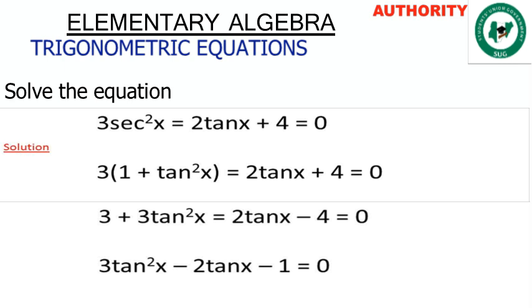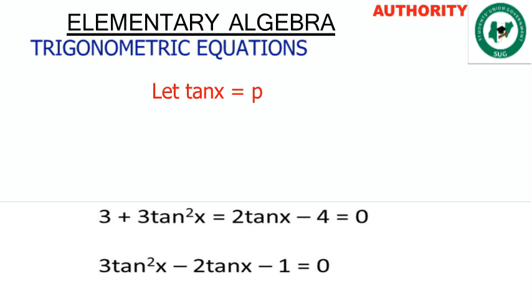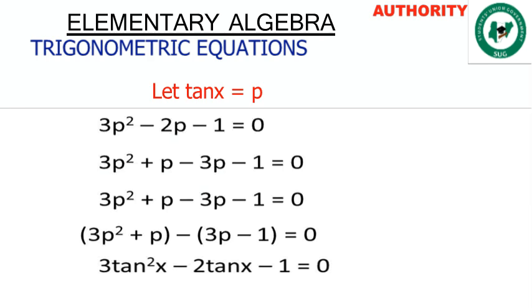Now let's substitute: let tanx equal p. So we have 3p² minus 2p minus 1 equals 0. From here we factorize.